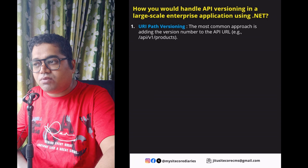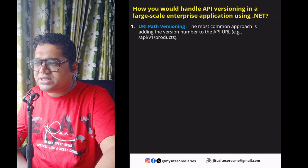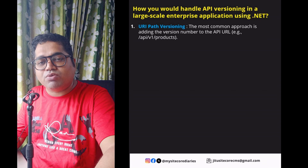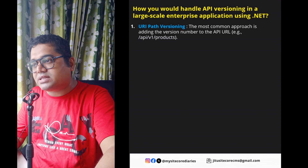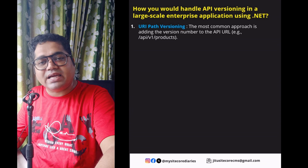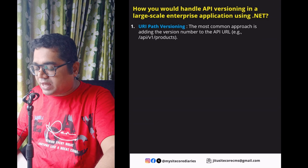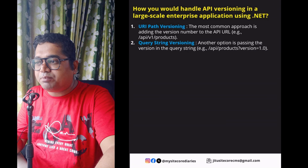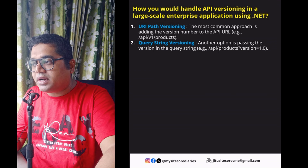URL path versioning involves adding the version number directly to the API URL. You've probably seen this before — for example, API/v1/products. That is called URL path versioning. The second approach is query string versioning, where you pass the version as a parameter in the query string.